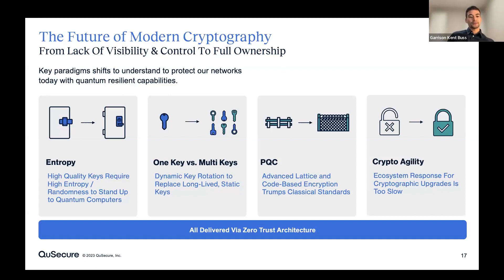Starting on the left with entropy, we believe that high quality entropy derived from whatever source you deem most relevant to you — this can be a QRNG or other hardware-based random number generator, sufficiently random pseudo-random numbers, or whatever you would like — to generate those high quality keys. Being able to choose your source and integrate that into your cryptography is something we think is fundamental to the future.